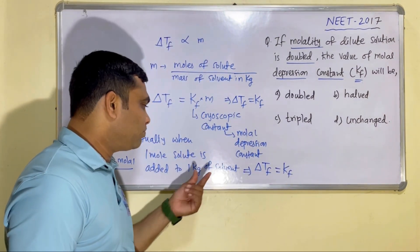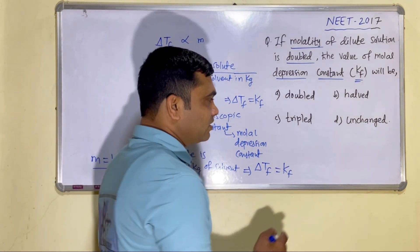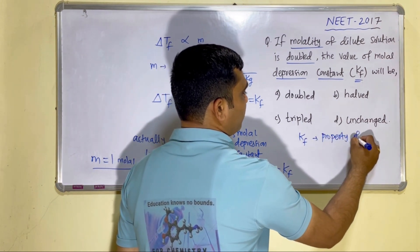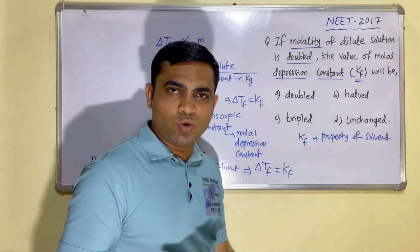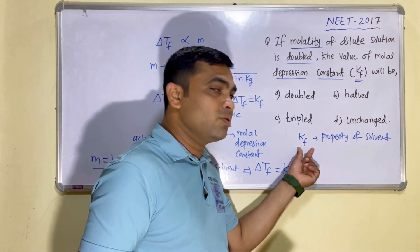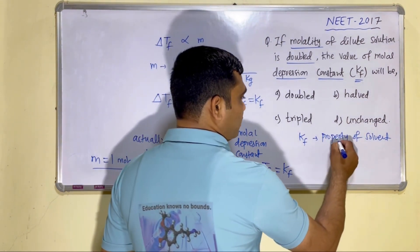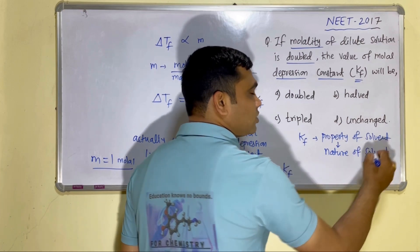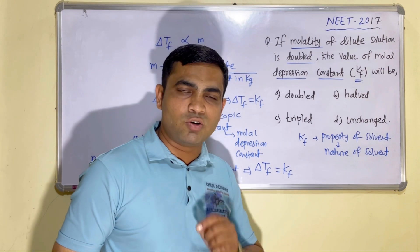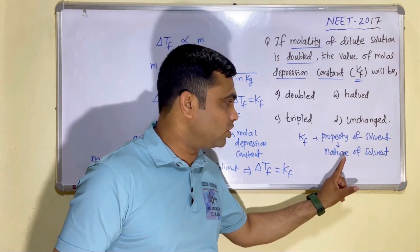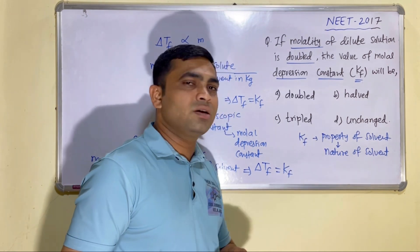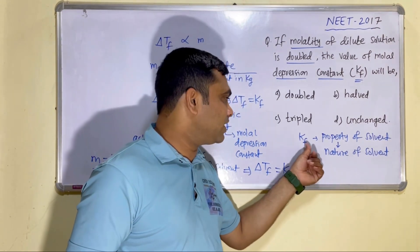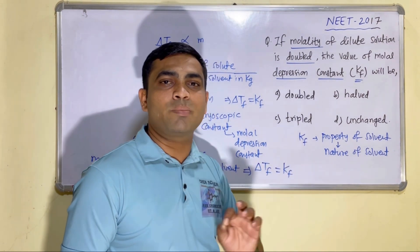So the depression in freezing point constant Kf is nothing but the depression in freezing point of a solution in which one mole of solute is present per kilogram of solvent. You also have to remember that Kf is a property of the solvent — whatever solute you add, the solute will not decide the value of Kf. Only the solvent decides it. Kf depends on the nature of the solvent and does not depend on the number of solute particles.